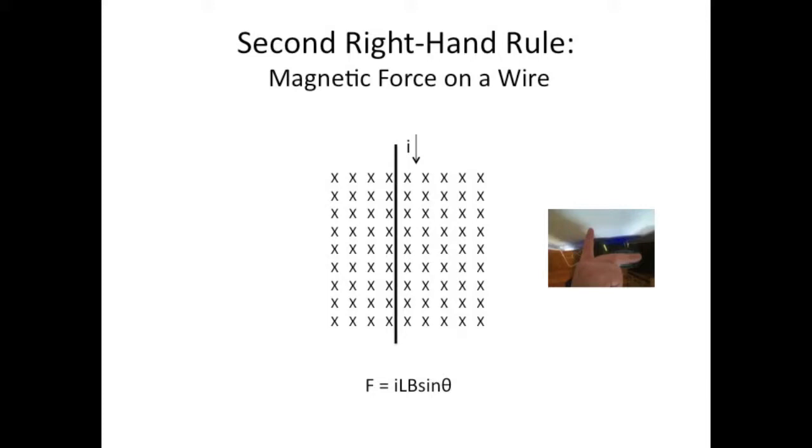Anyway, this gives us our result, the middle finger, which is always what you're looking for, it will always be the resultant vector, so the force on the wire in this example is pointing to the right.